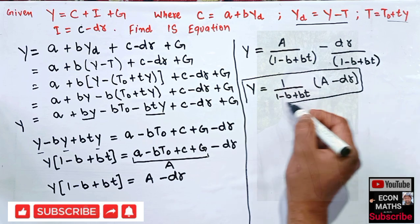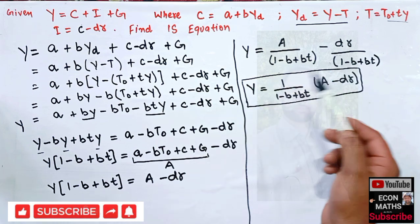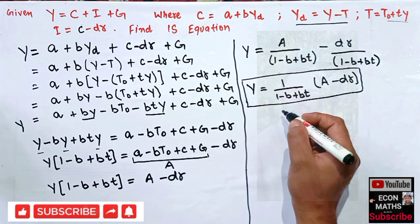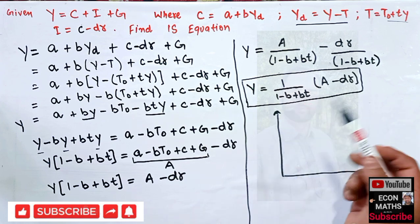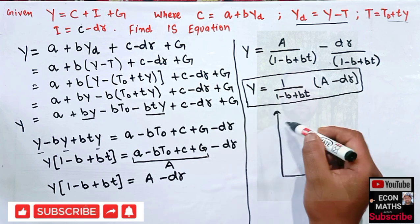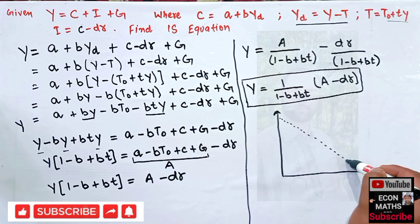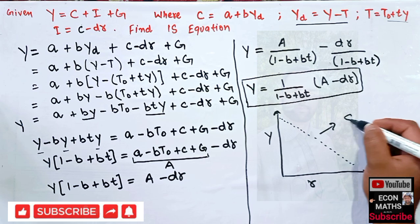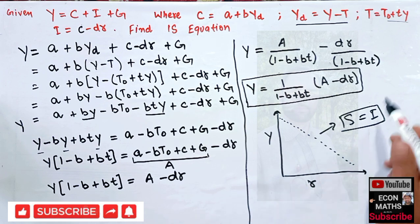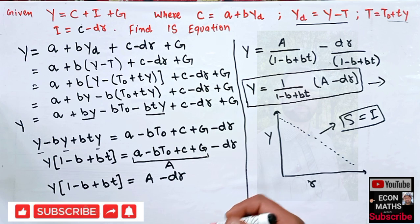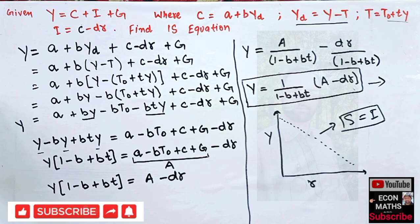This is our IS equation: Y = [1 / (1 − b + b·t)] · (A − D·R). The relationship between the rate of interest R and income Y is negative because of the negative D·R term. The IS curve is actually a locus of different combinations of rate of interest and income where savings equals investment at every point. If we plot different values of R and Y, we will get a downward sloping curve. I have made a detailed video on the IS-LM model in my playlist. Thank you.